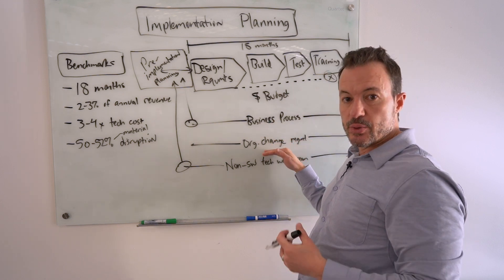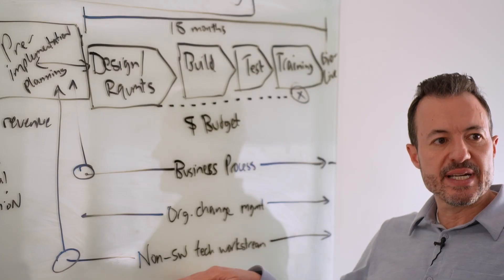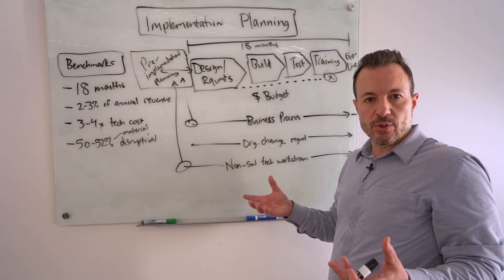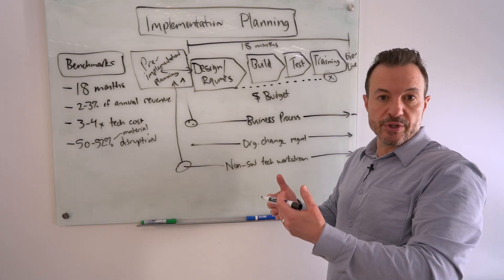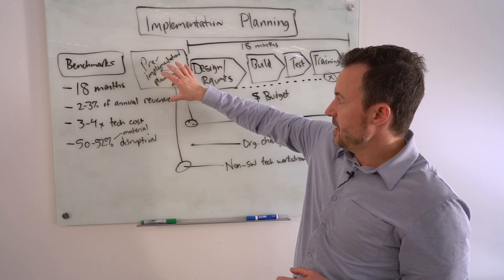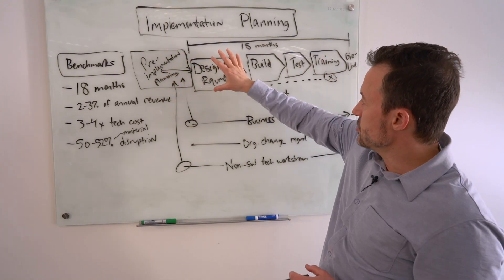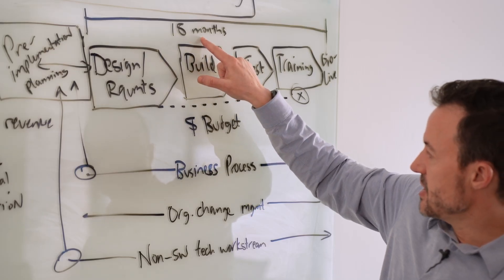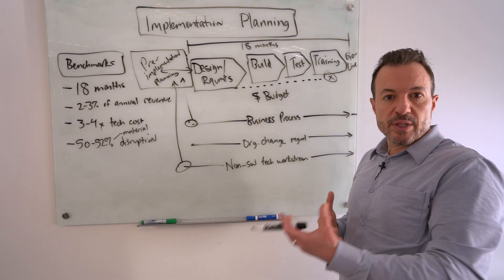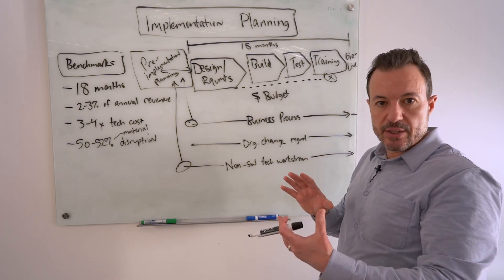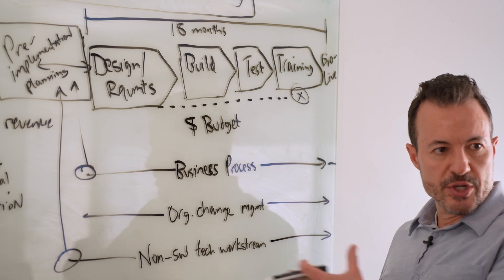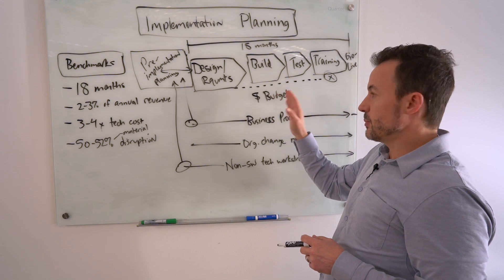Pre-implementation planning involves doing initial change impact assessments, organizational readiness assessments, creating a technology roadmap showing how different technologies integrate, how data will migrate, how systems will be decommissioned, and what interim interface points are needed. The time and money spent in pre-implementation planning gives you much greater clarity and confidence in your overall plan. Once completed, you can flex the vendor's 18-month estimate up or down based on process complexity, organizational change scope, staffing, and available internal resources.